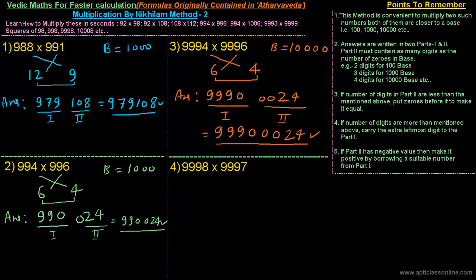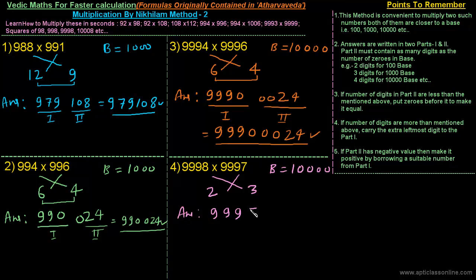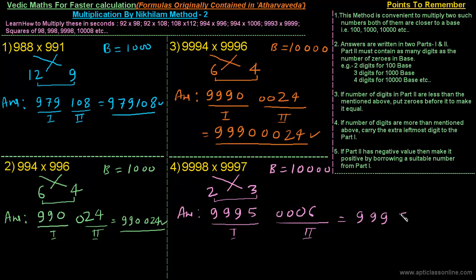The last question is 9998 × 9997. For this also the base is ten thousand. 9998 is two less than ten thousand, and 9997 is three less than ten thousand. The first part of the answer is the difference: 9998 minus 3, or 9997 minus 2, which is 9995. The second part is the multiplication of 2 and 3, that is 6. Since the second part must contain four digits, we put three zeros before it: 0006. So the final answer is 99950006.